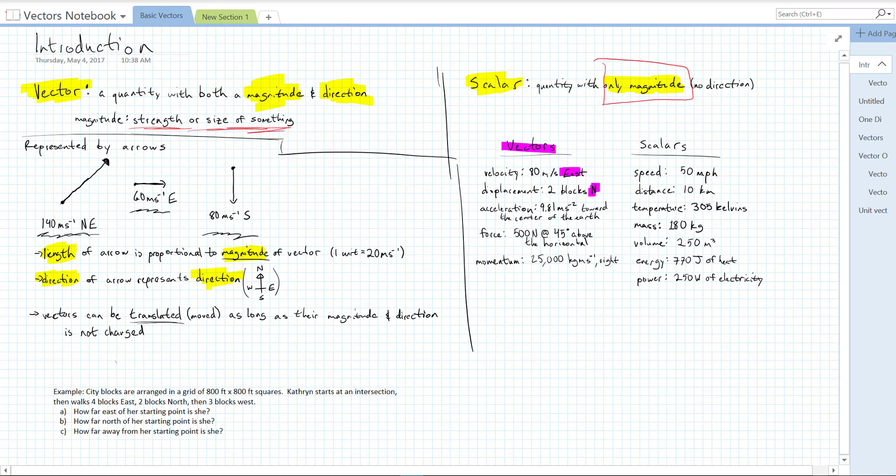So if we go back to these first scalars and vectors, the speed of 50 miles per hour, that's just a magnitude. For our velocity vector over here, 80 meters per second east, this is the magnitude of the velocity, and this is the direction. So magnitude is just the number part. Direction is just the direction part.